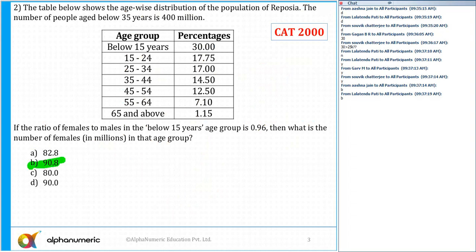Let's see. The table shows the age-wise distribution of the population of Reposia. The number of people aged below 35 years is 400 million.